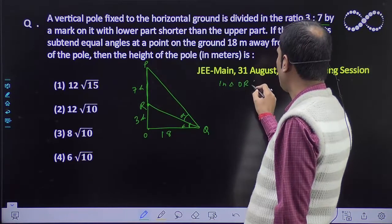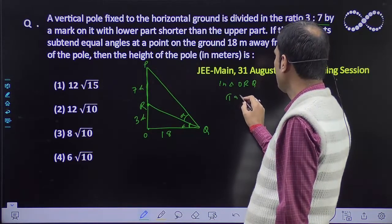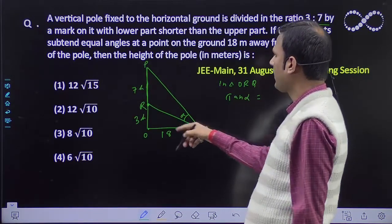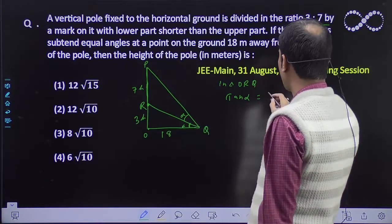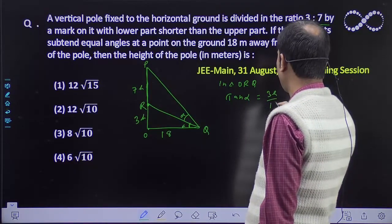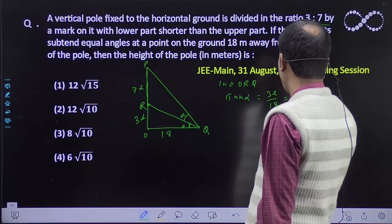In triangle OPQ, tan alpha, tan alpha equals what? 3h upon 18, which means h by 6.